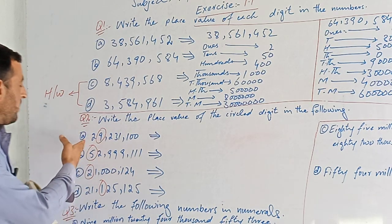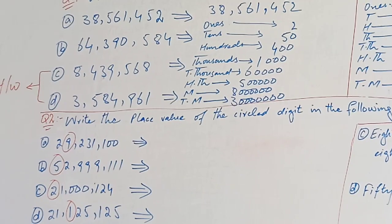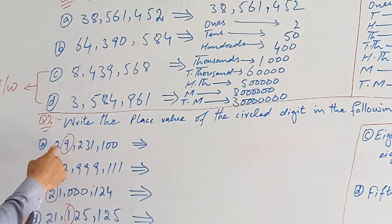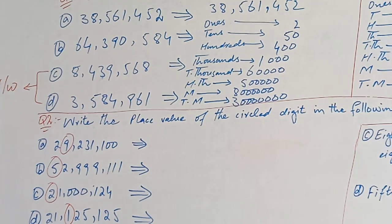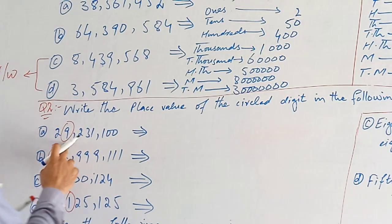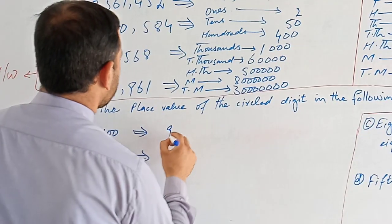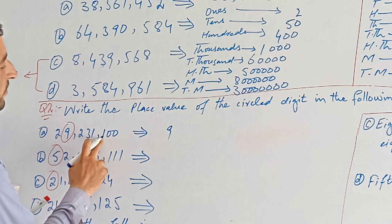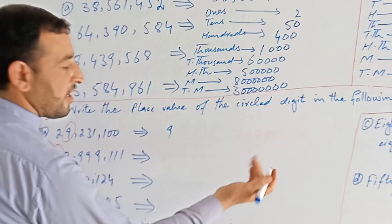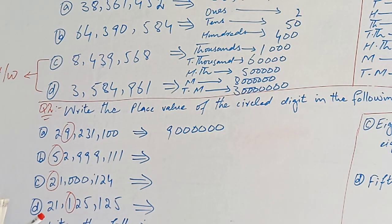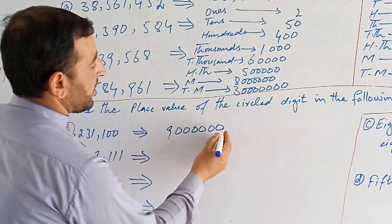This question is A, B, C, D number. The place value — the 9 is the first time. The 9 is the same. 1, 2, 3, 4, 5, 6. 1, 2, 3, 4, 5, 6. The 9 is the same.